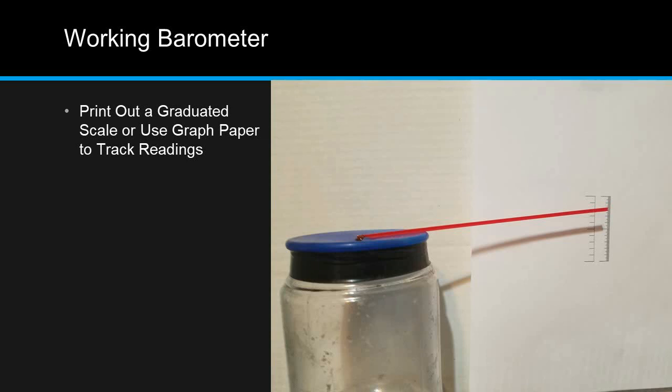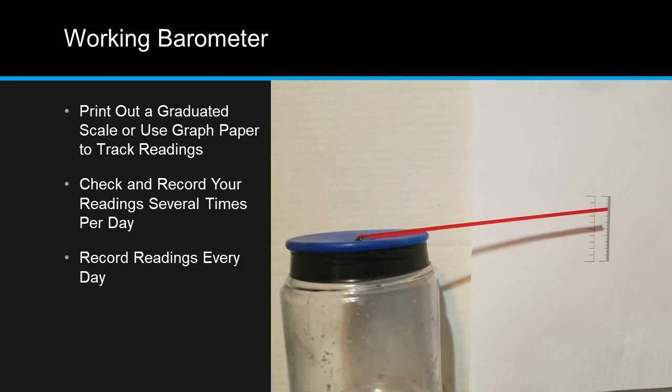You'll want to print out a graduated scale or use graph paper that you've numbered to help you track the readings. Check and record your readings several times per day.